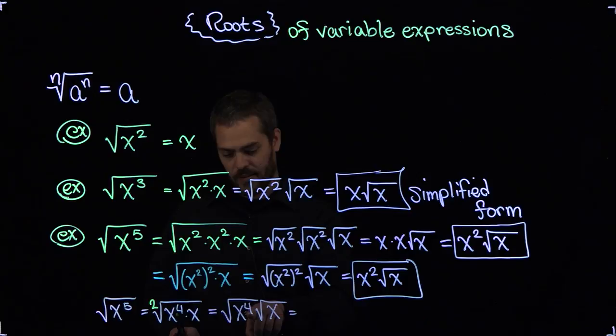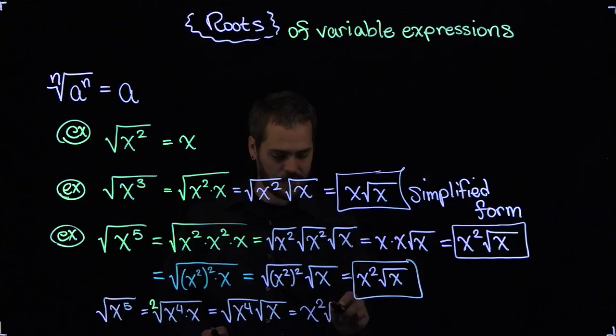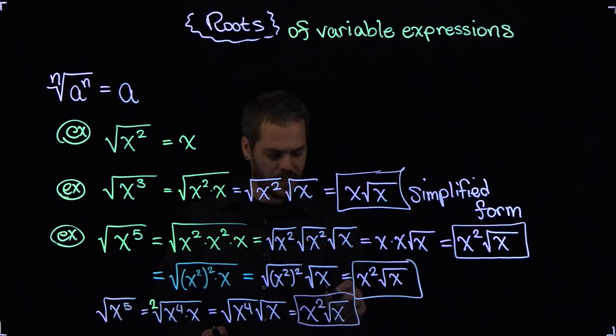Take the power here, x to the fourth, divided by the index, 2. 4 divided by 2 is 2. And that gives me the power of x outside here. The square root of x, I'm just going to leave as the square root of x. And I'm leaving that in there.